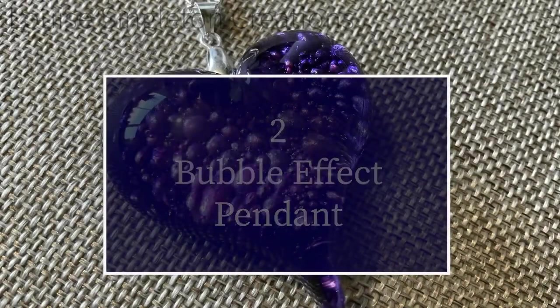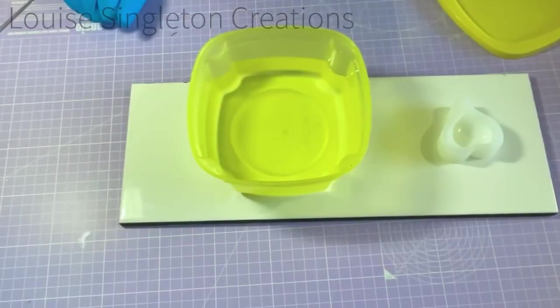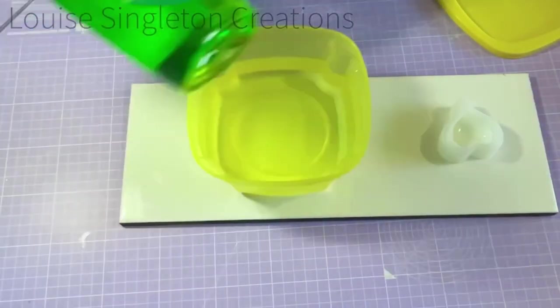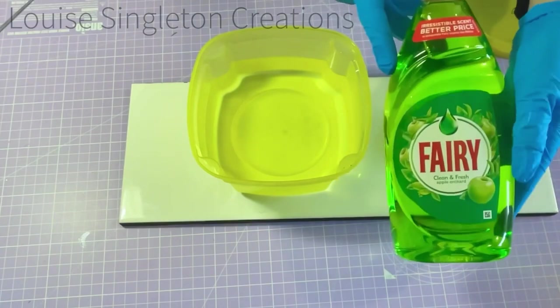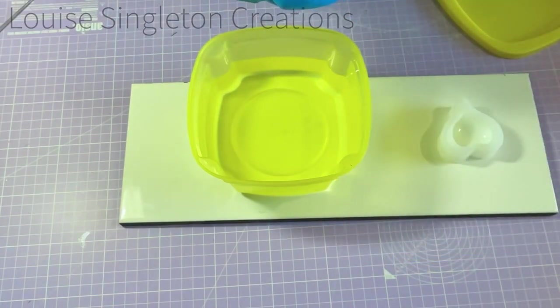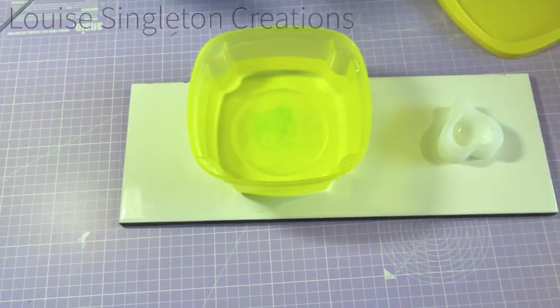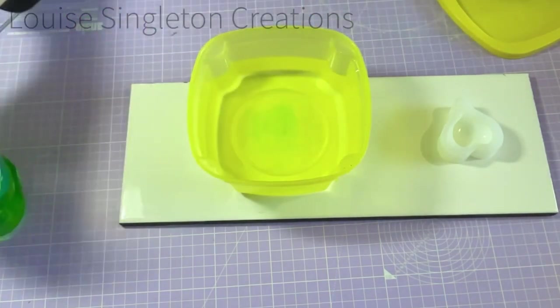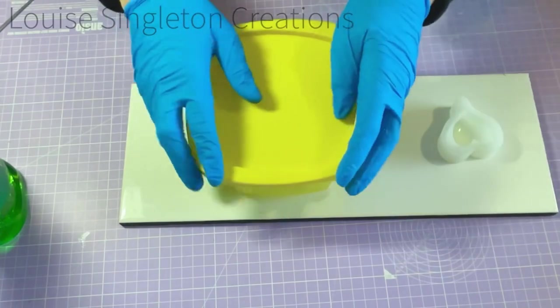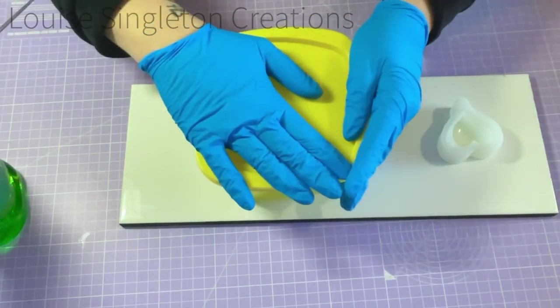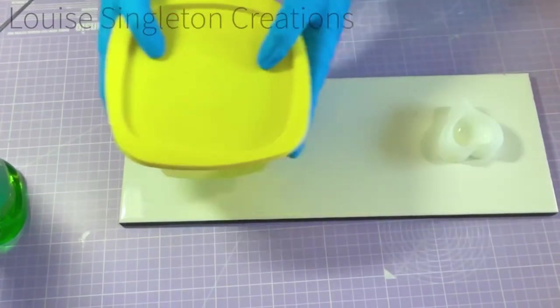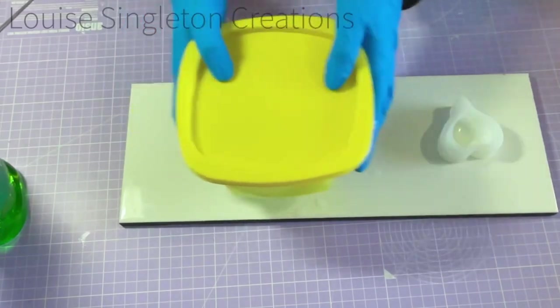Number two: the bubble effect pendant. I'm using the same mold again because I really like that heart-shaped mold, and I decided to use the bubble effect for this one. It's one of my favorite things to do with UV resin—this bubble effect is so much fun. All you need is some water and some dish soap in a box or tub with a lid on to make some bubbles.